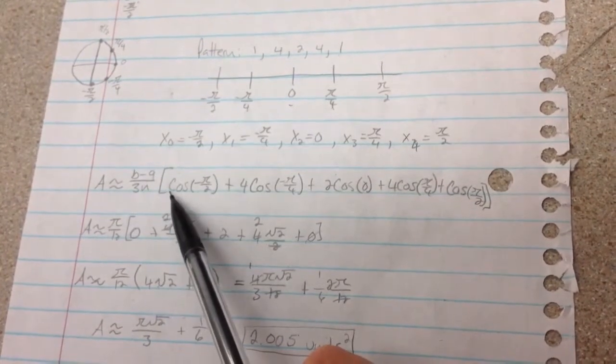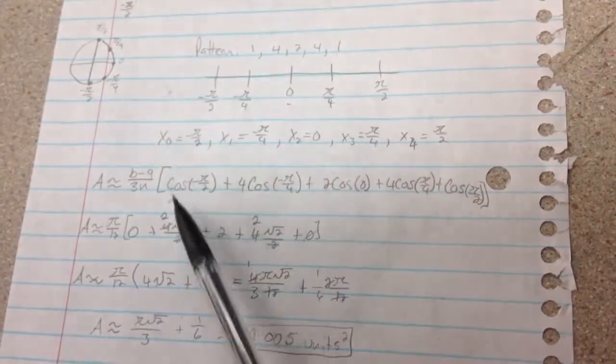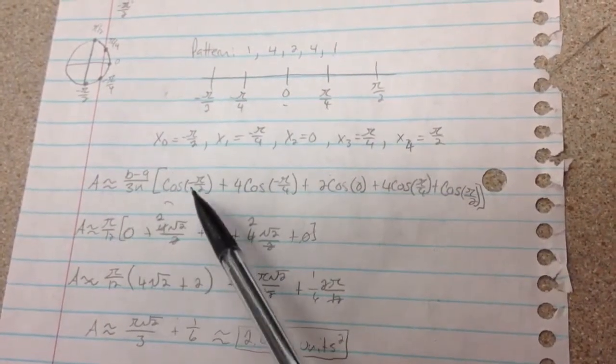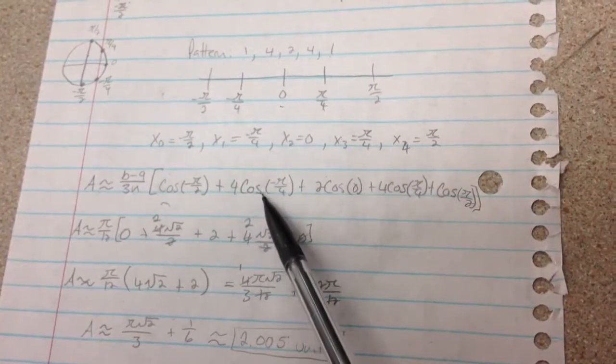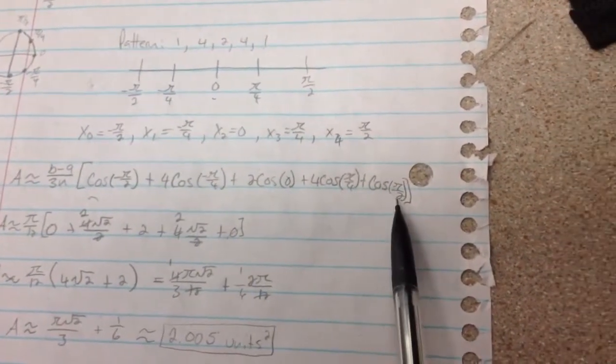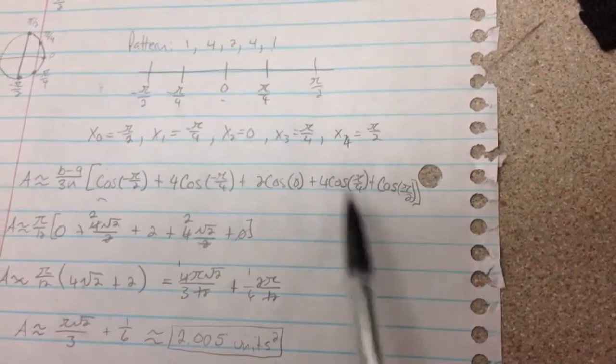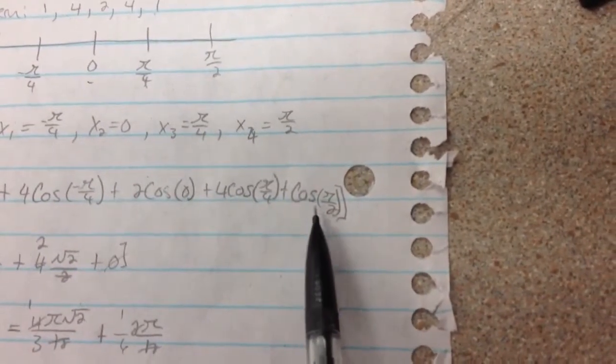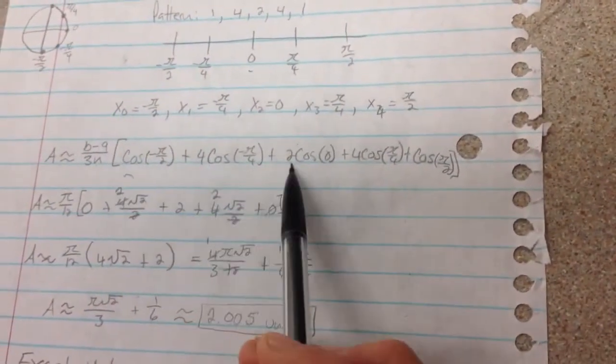Then it's going to be from your integral, you get the cosine of x times your x sub 0, or of your x sub 0, plus 4 cosine x sub 1. And all the way down through, kind of ran out of room here, but all the way to cosine of pi over 2. And as you can see, the coefficient is 1, 4, 2, 4, 1.